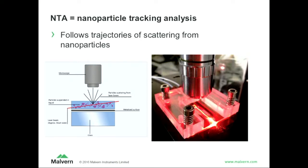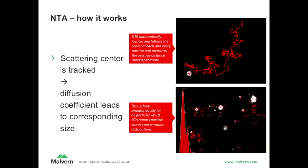You can follow these trajectories under a microscope, and that's called nanoparticle tracking analysis. So that's a way to get, from this random walk — this red line that you see on the screen in the upper right — you can follow that trajectory, the mean square displacement, and from that determine one by one the diffusion coefficient of every particle, and then get a size distribution out of that.